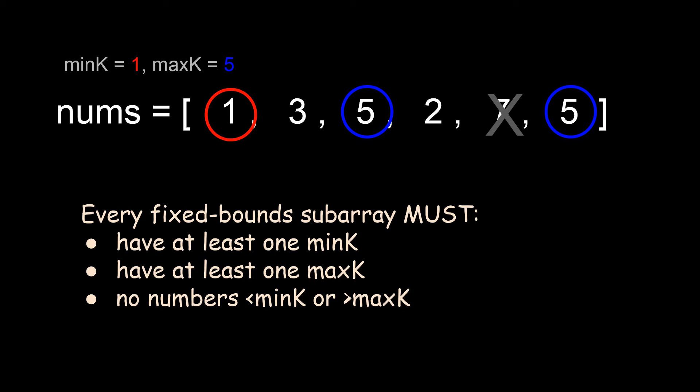First, we've identified that every valid subarray must follow these three rules. They must have at least one copy of min k, they must have at least one copy of max k, and they cannot have any numbers smaller than min k or larger than max k.